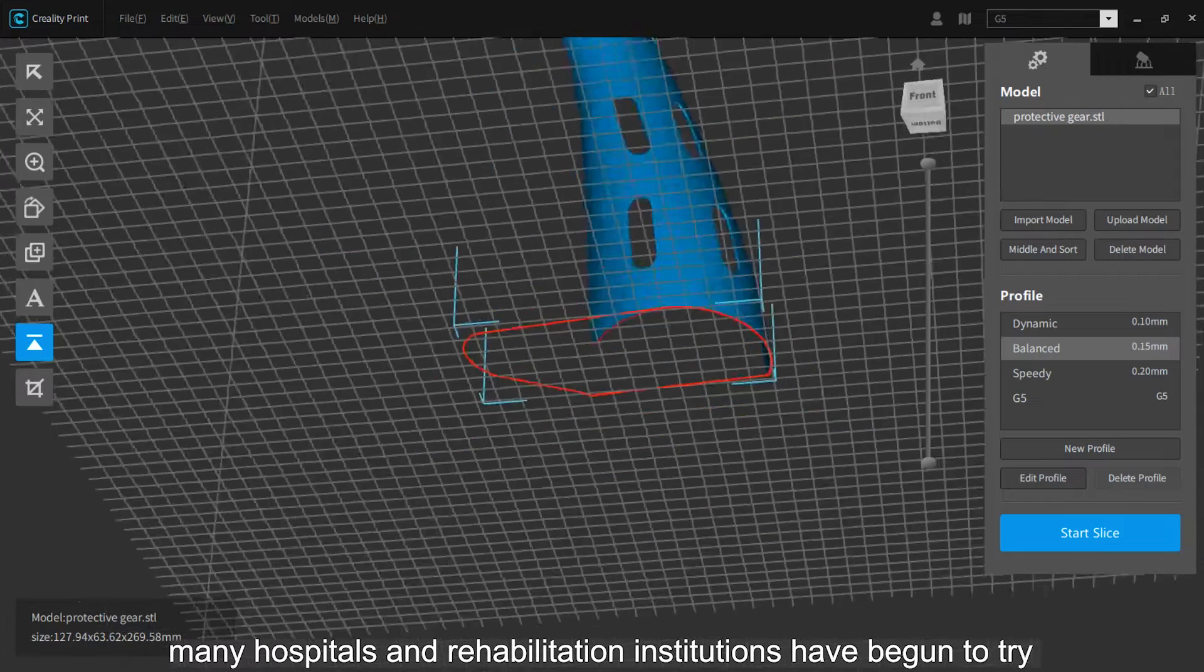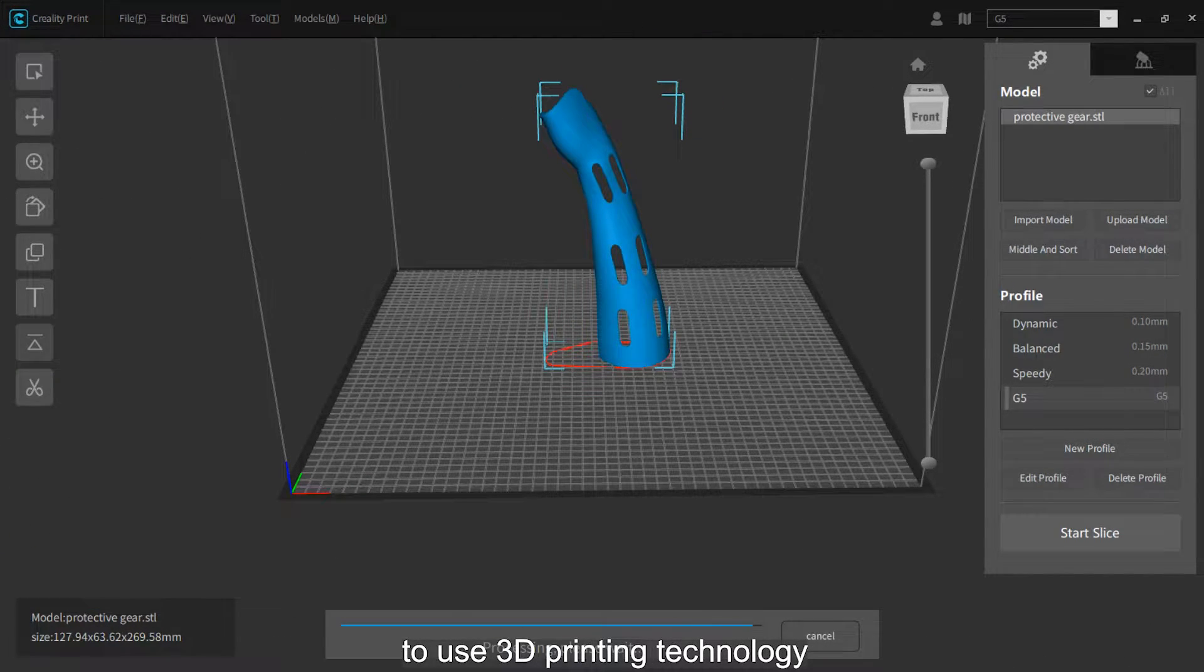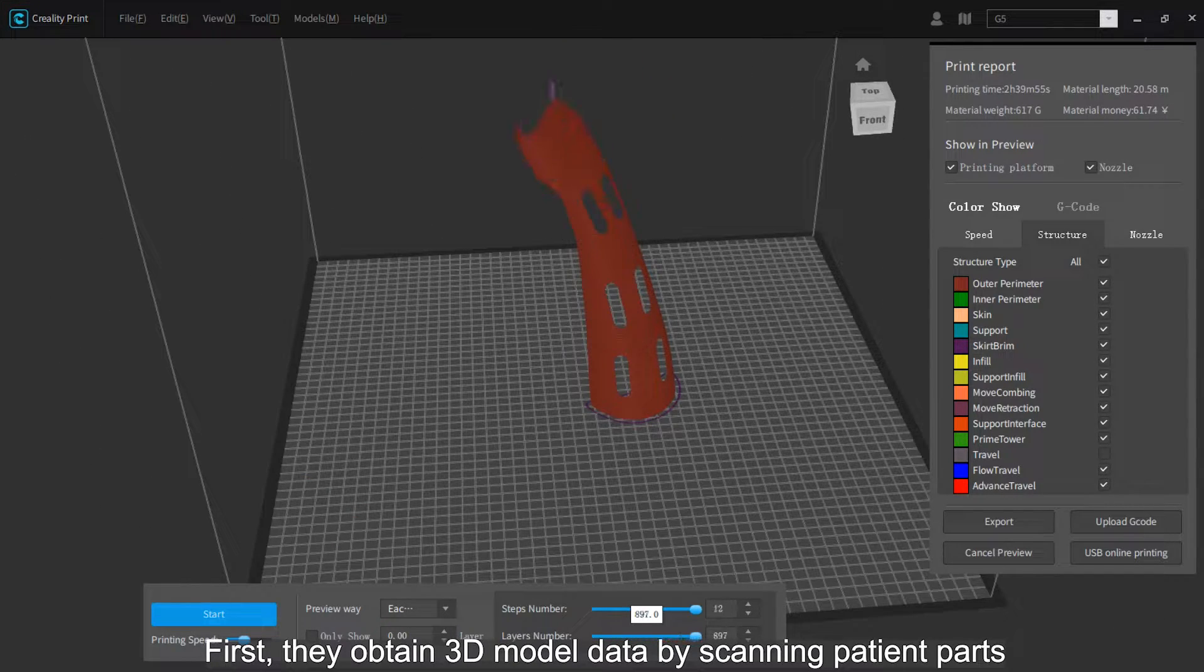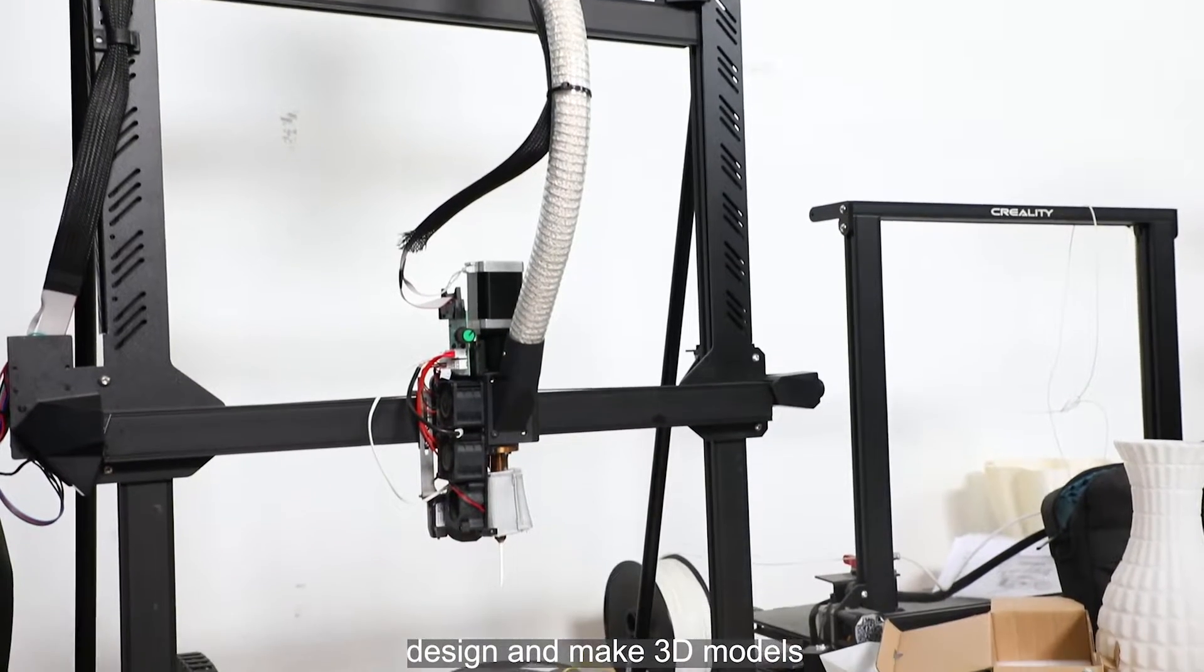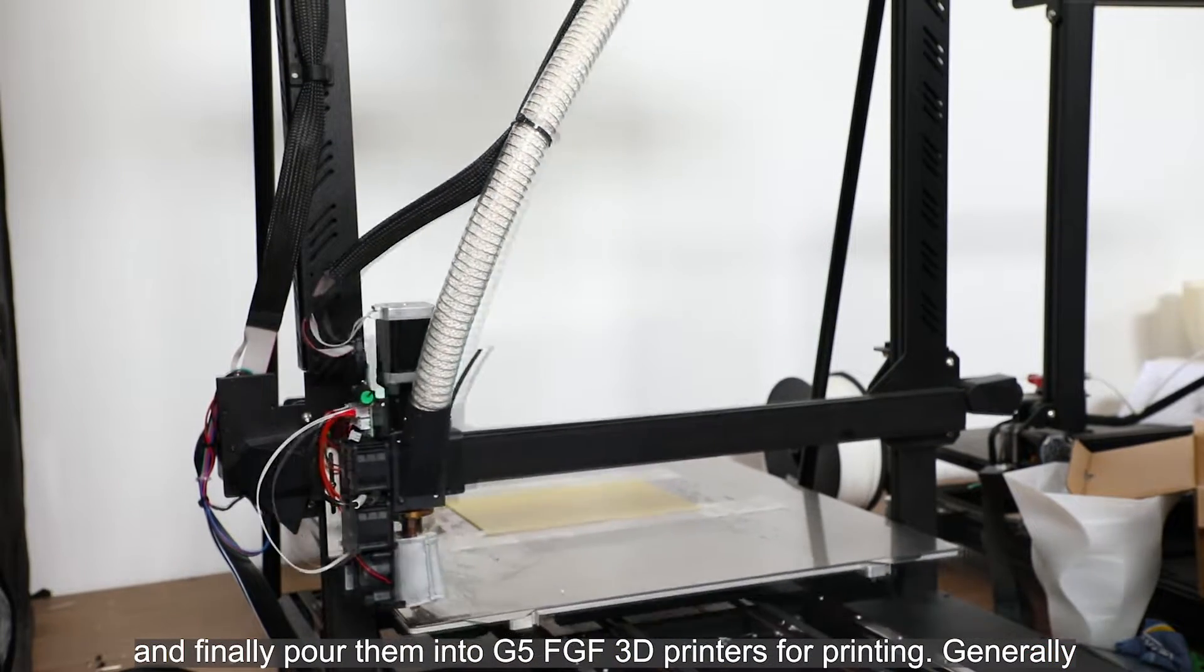With the improvement of digital technology, many hospitals and rehabilitation institutions have begun to use 3D printing technology. First, they obtain 3D model data by scanning patient parts, then design 3D models, and finally send them to 3D printers for printing.